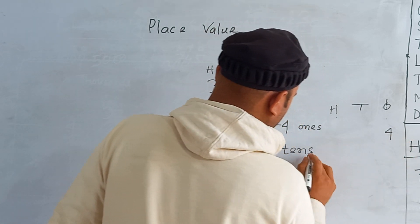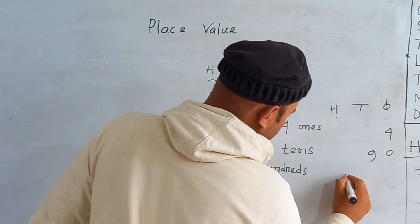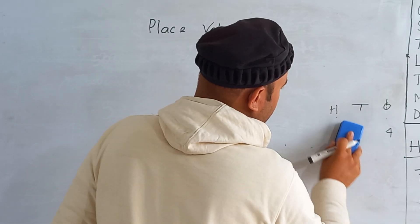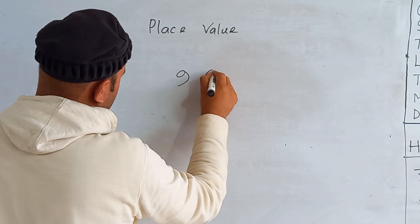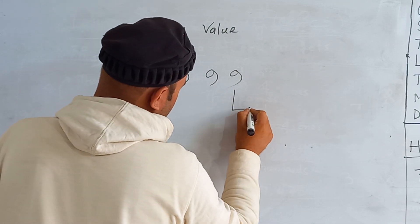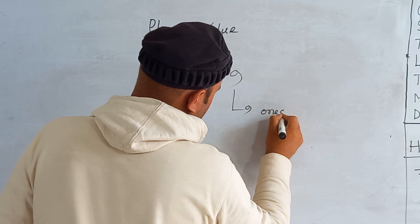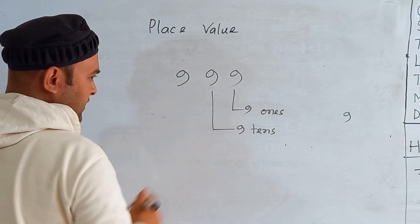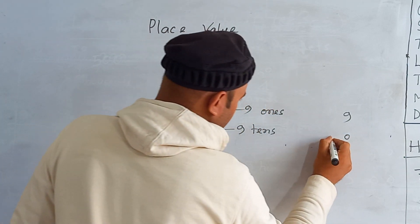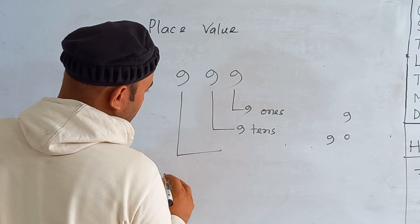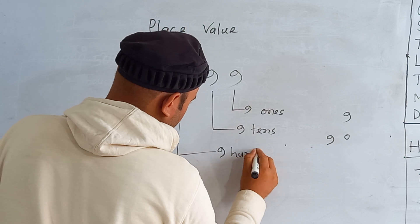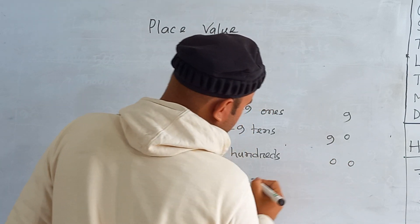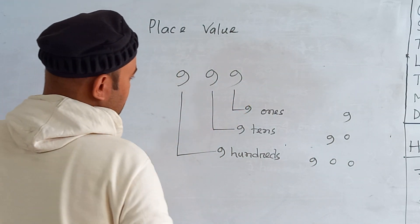So for 394 you write: four ones = 4, nine tens = 90, three hundreds = 300. Now the next example is 999. Nine is in the ones place — nine ones equals 9. This nine is in the tens place — nine tens equals 90, write zero in ones place and nine in tens place. The last nine is in the hundreds place — nine hundreds equals 900, zero in ones, zero in tens, nine in hundreds place.